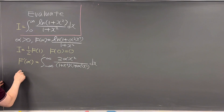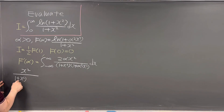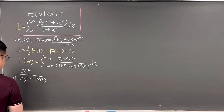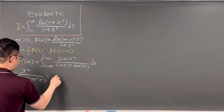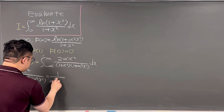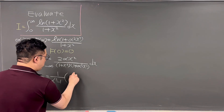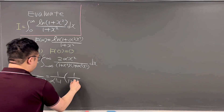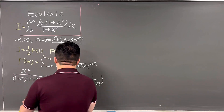We work on x² over (1 + x²)(1 + alpha²x²). Using partial fractions, this equals (1/(alpha² − 1)) times [1/(1 + x²) minus 1/(1 + alpha²x²)].